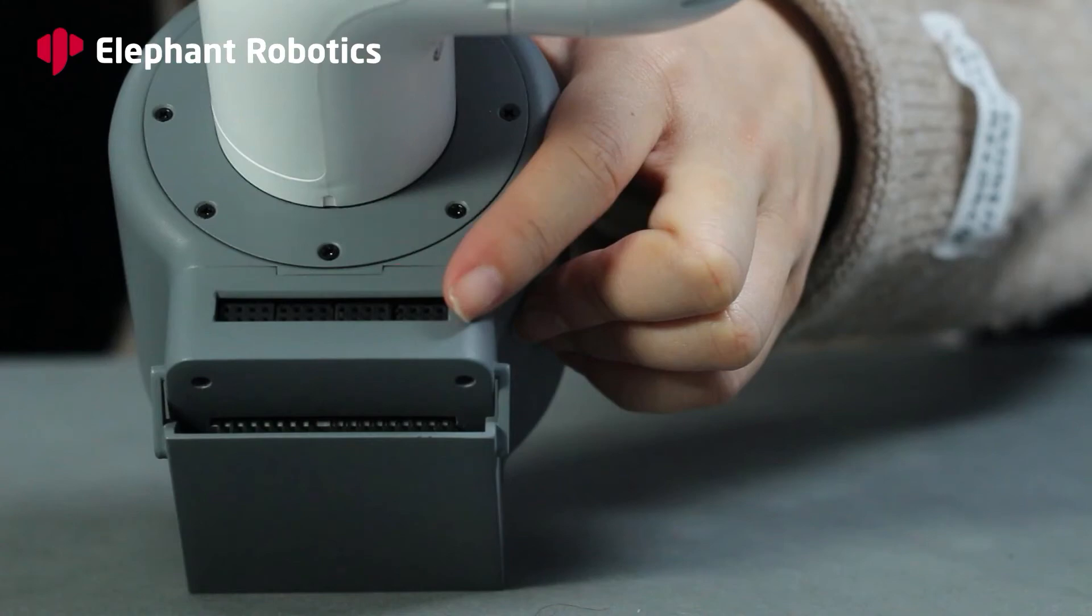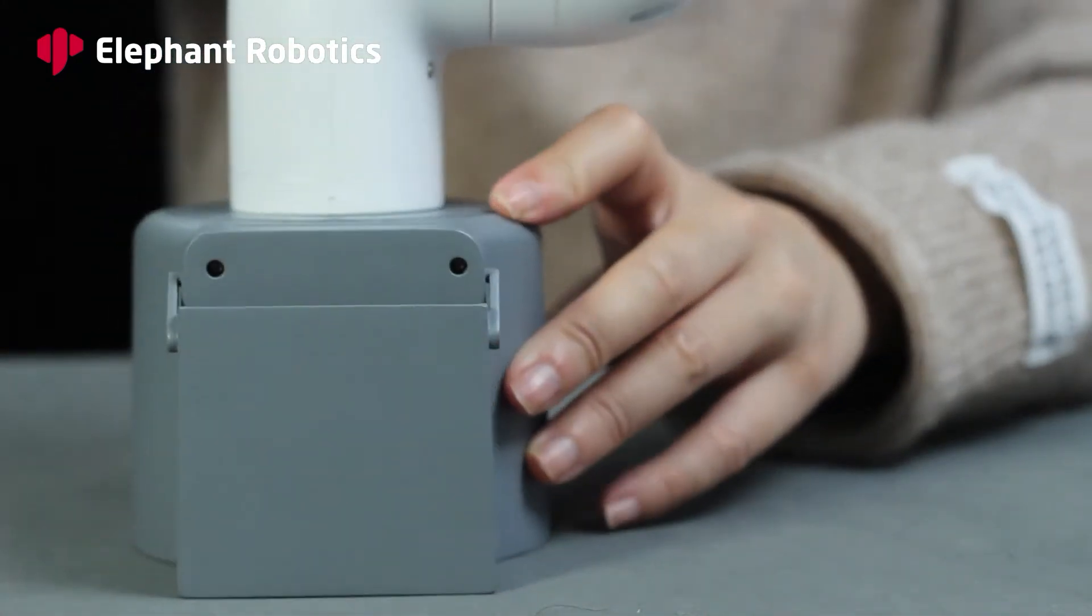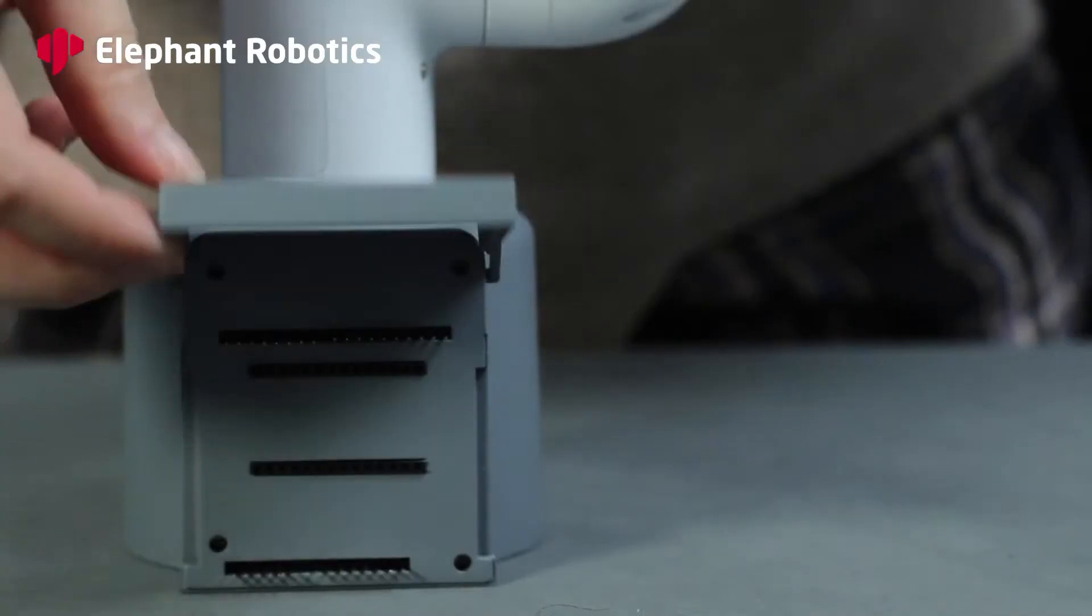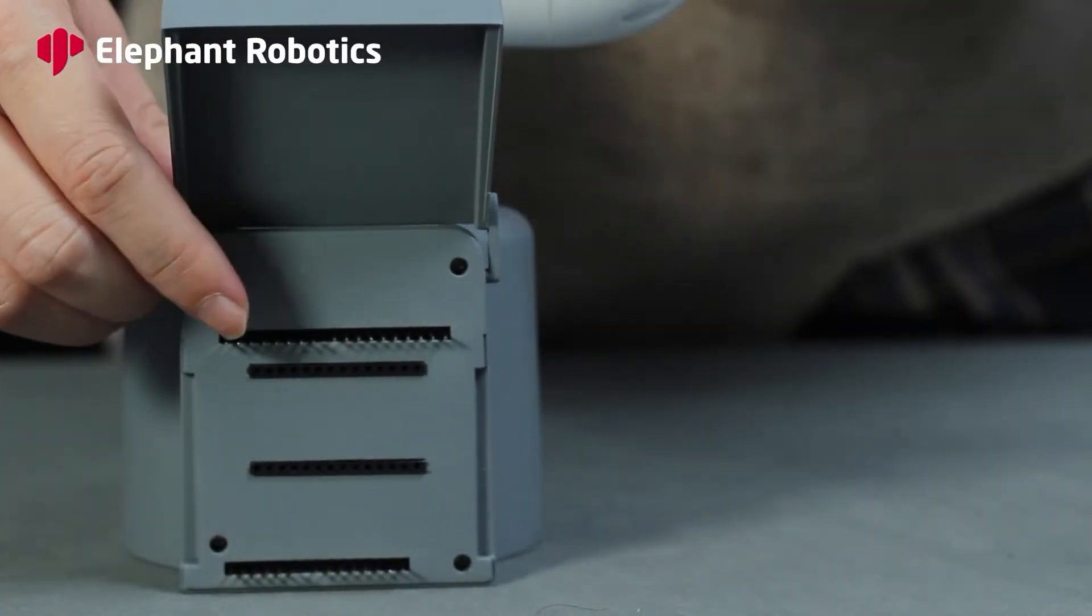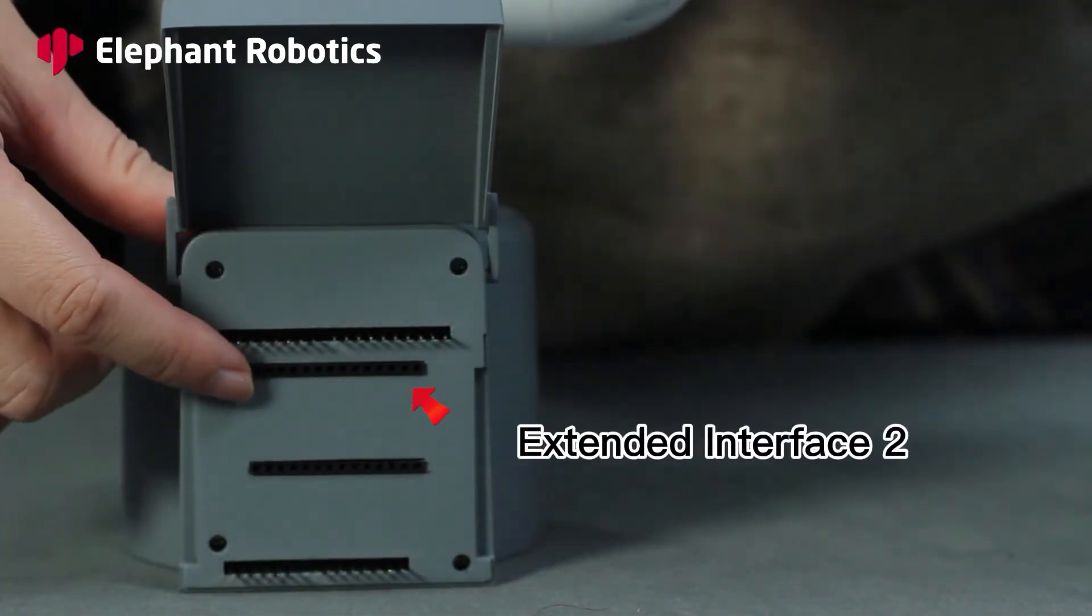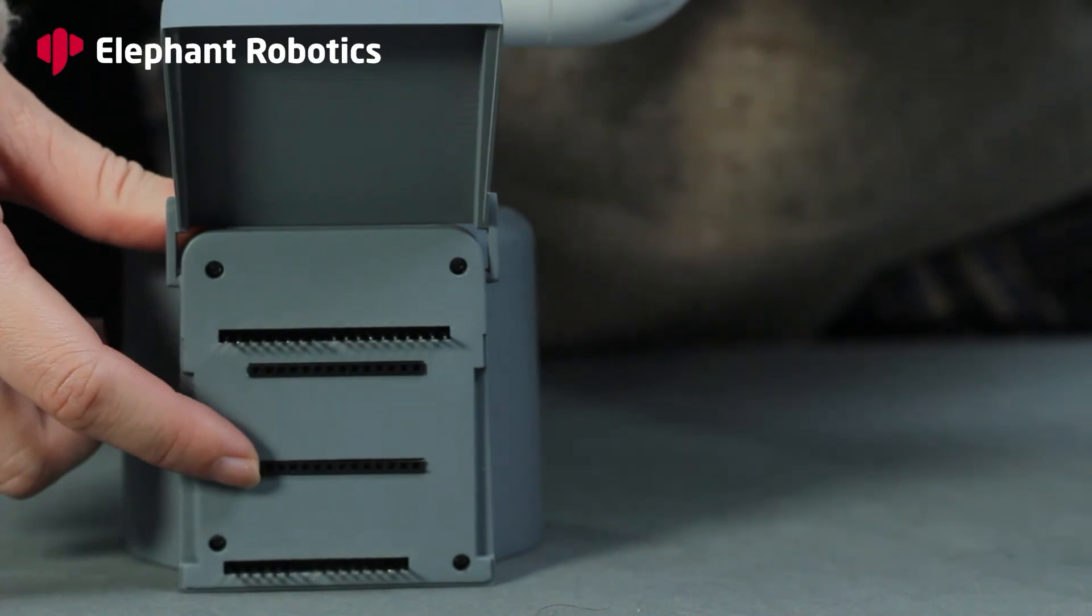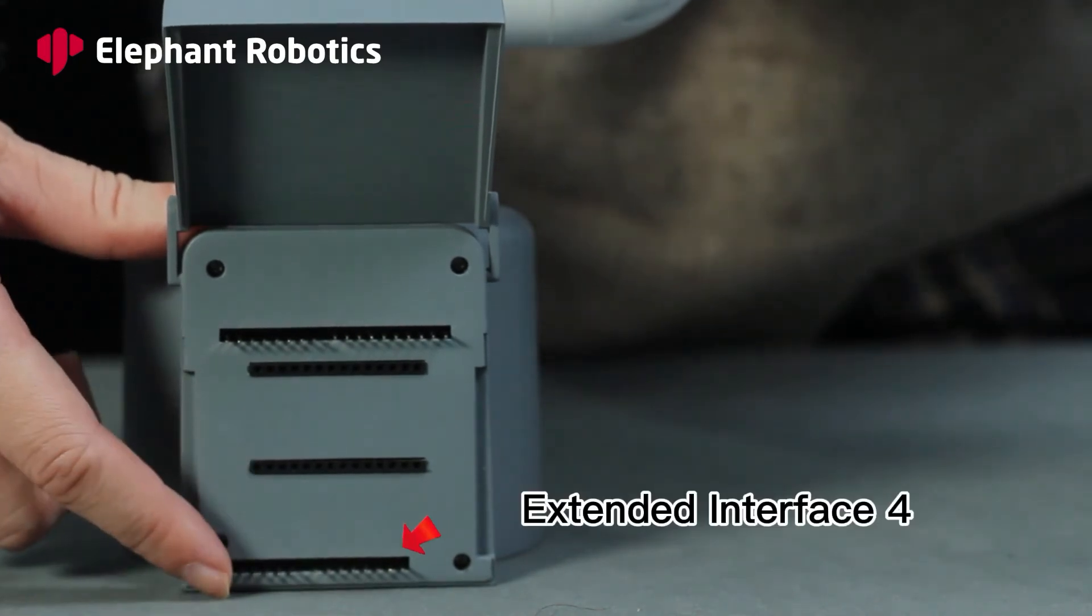Extended Interface Group 5 on the base corresponds to each functional interface of the connected Arduino development board. These are the signal names of the four Extended Interface Groups on the front of the base: Extended Interface 1, Extended Interface 2, Extended Interface 3, Extended Interface 4.